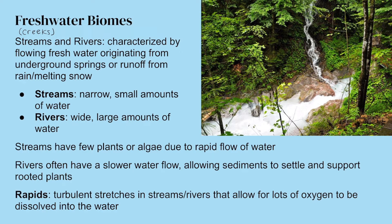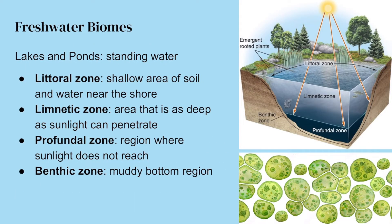Rapids are turbulent stretches in streams or rivers — turbulent means there's a lot of fast water movement, often over rocks, mixing with the air. That allows a lot of oxygen to be dissolved into the water. Organisms that need lots of oxygen are located closer to the rapids, whereas organisms that require less oxygen may live further away from those rapids.